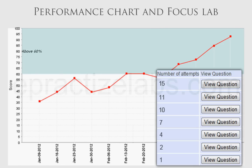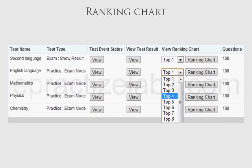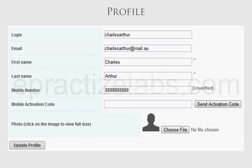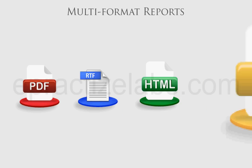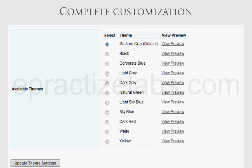Performance Chart and Focus Lab for tracking results to track training progress. Ranking Chart to select candidates for appreciation or performance appraisal. Profile with images to identify exam takers. Multi-format outputs: reports can be exported to PDF, RTF, HTML, and CSV formats. Complete theme customization based on your logo by single click.